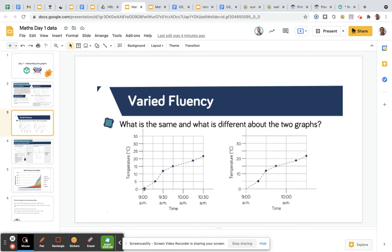So when we read a line graph, we look at time is often used on the bottom axis going across. And what we can see here is we've got 9 a.m., 9:30, 10, 10:30. So that's the scale of every half an hour.